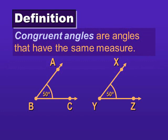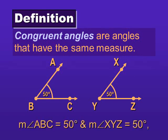Congruent angles are angles that have the same measure. Hopefully that is not shocking to you, as it is exactly the same concept as segments having the same measure are congruent. For example, angle ABC is 50 degrees, angle XYZ is 50 degrees. So the measures are equal. Therefore, the angles are congruent.